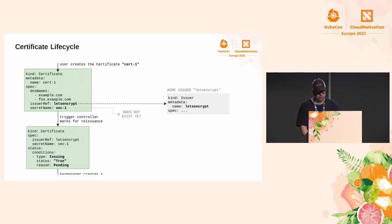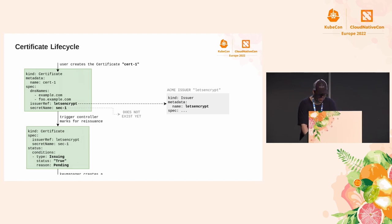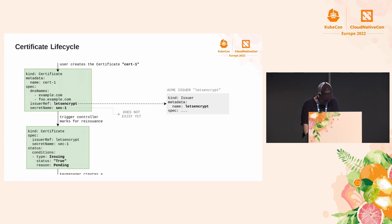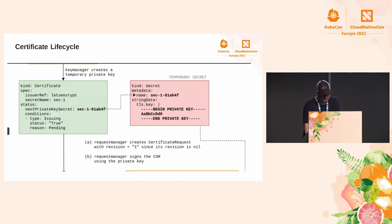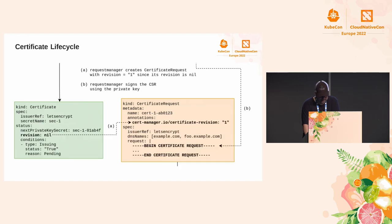At this point I will summarize the previous process in a state diagram. The certificate lifecycle using the Let's Encrypt issuer can be described as follows: first, a user creates a new Certificate object that references the Let's Encrypt issuer. In the second step, cert-manager creates a temporary private key that references a secret, which is assigned to the certificate.